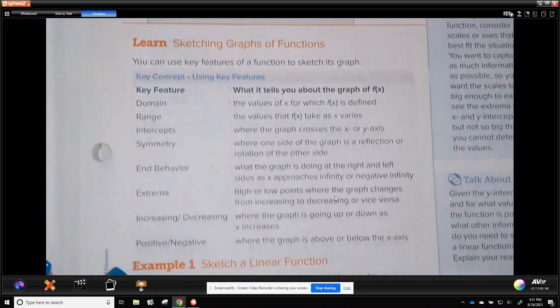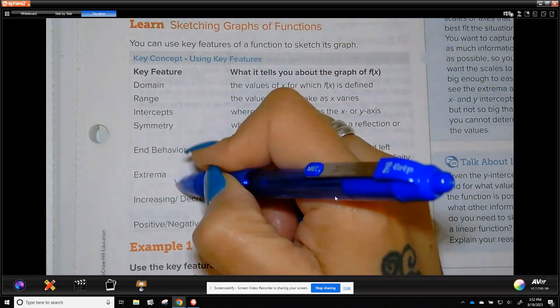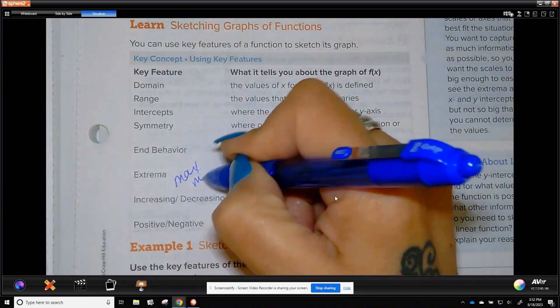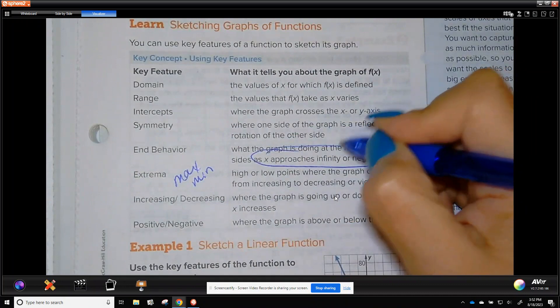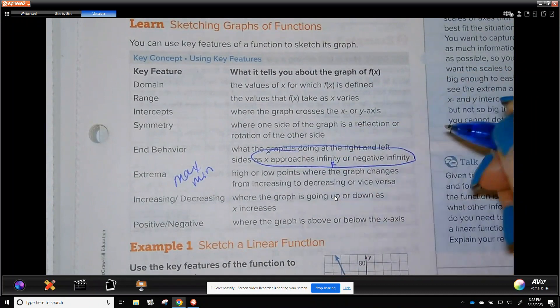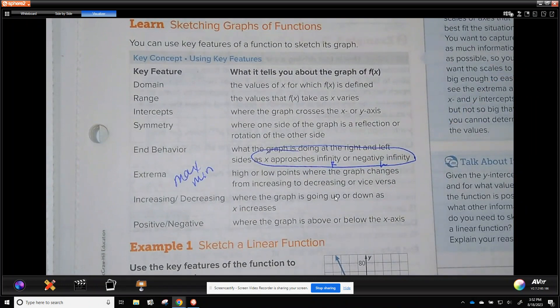So these are all the features of a graph that we've gone over, most of them. Remember extrema are max and mins. End behavior, you need to know the correct notation as it goes to infinity is the right and what's the function doing if it goes to negative infinity which is the left.